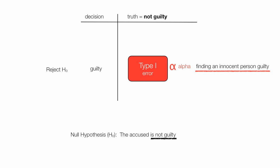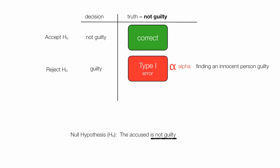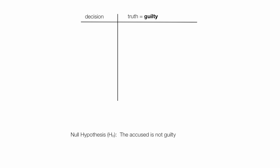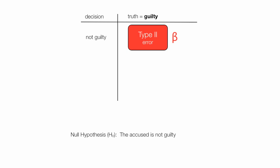We're finding an innocent person guilty, which is not very good — it's a bad thing. In this situation, the correct decision is to accept the null hypothesis and find the accused not guilty. Accepting the null hypothesis is correct; rejecting it is wrong. Now, if I change the truth or the reality to guilty, and I find the defendant not guilty when they are guilty, I commit a type 2 error, beta.